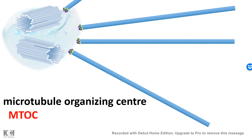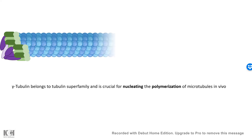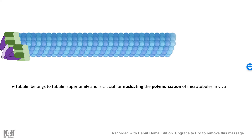Inside the cell, there is an organelle known as the centrosome, which has a centriole and pericentriolar matrix. In the pericentriolar matrix there are proteins known as the gamma-tubulin ring complex. The gamma-tubulin ring complex is a superfamily of tubulin that helps in nucleation and polymerization of microtubules. In simple words, the gamma-tubulin ring complex works like an anchor, holding it to the microtubule organizing center and helping the microtubule to be stabilized and polymerized.